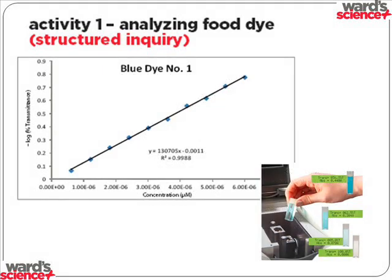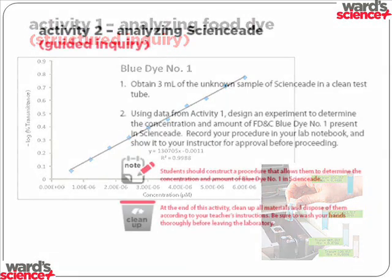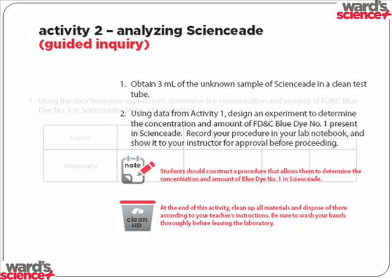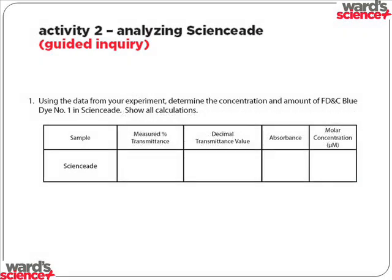After that is complete, activity one is done. Activity two is likewise very similar to activity one. You have a solution of science aid, which is blue dye number one, but diluted to an unknown concentration. Students will take their small sample of that blue dye, put it into the spectrophotometer, get the percent transmittance, calculate the absorbance, and then the molar concentration — all from the equation of the best fit line from activity one.